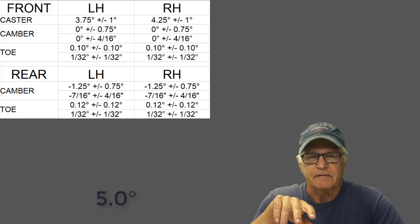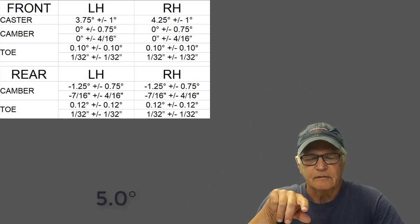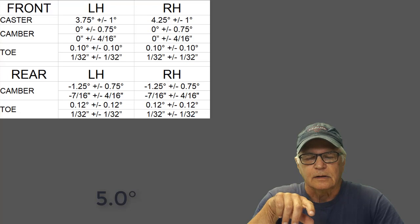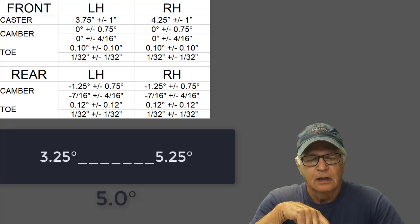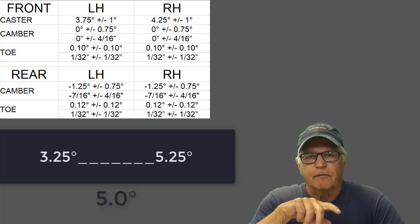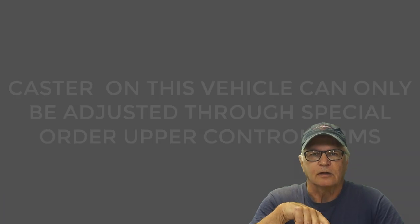Let's call that 5.0 degrees. So how does that compare to the specifications for our 2011 Ford Fusion? So the right-hand caster is 4.25 degrees plus or minus 1 degree. So that gives us a range of 3.25 degrees to 5.25 degrees. Our 5-degree measurement is within the tolerance.